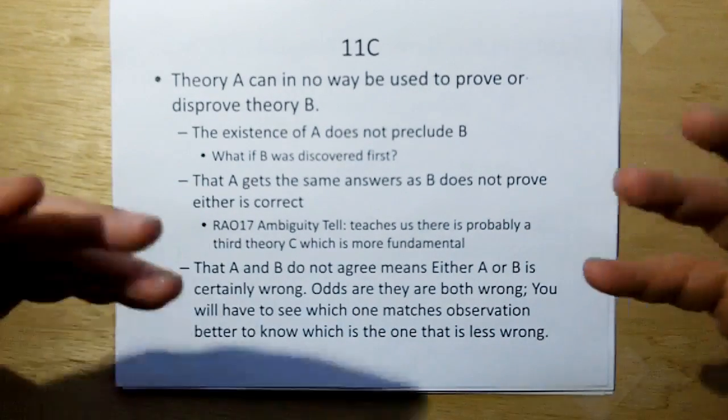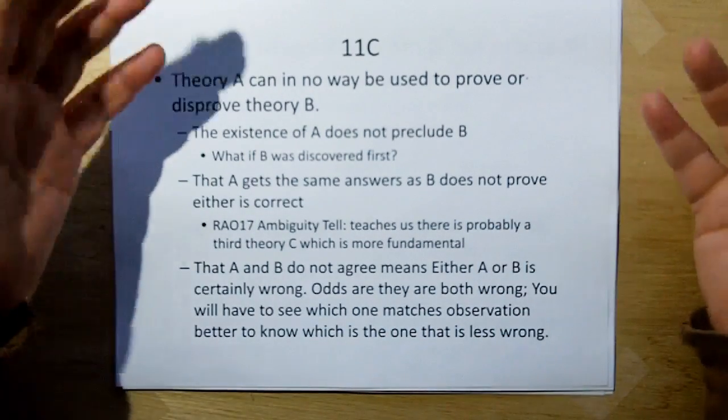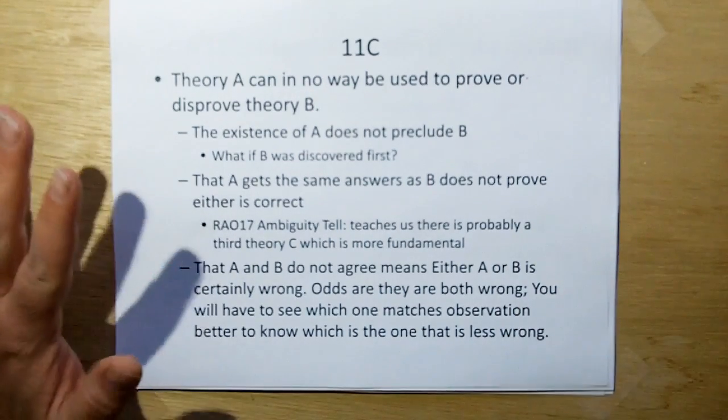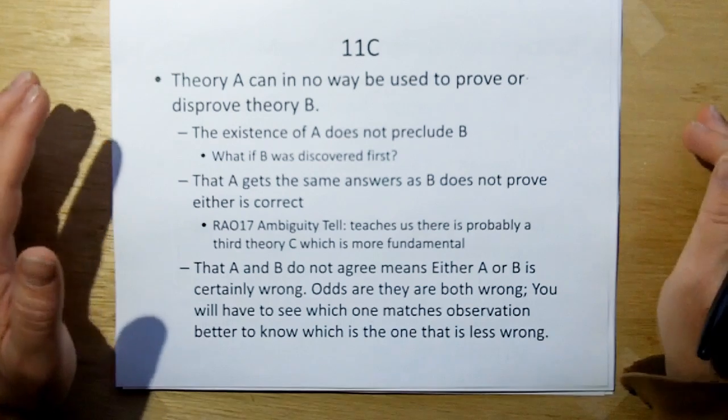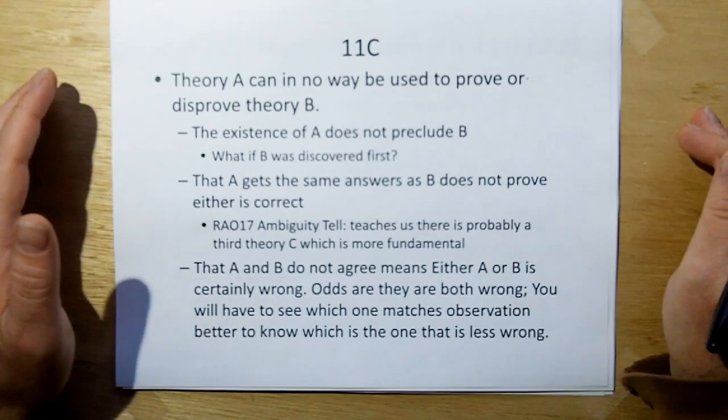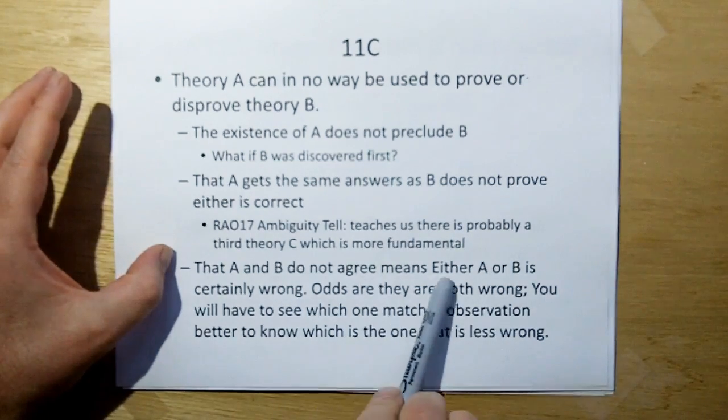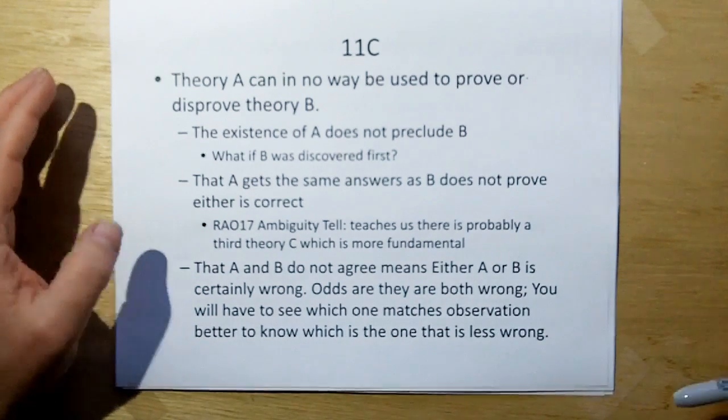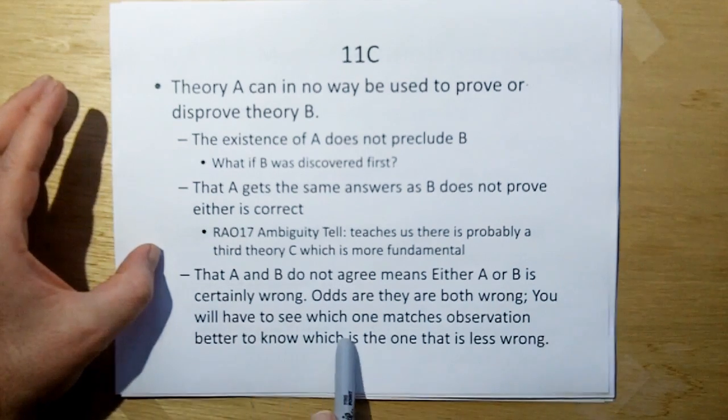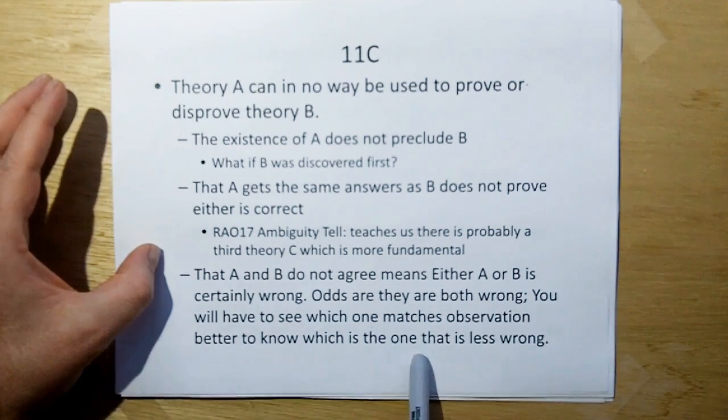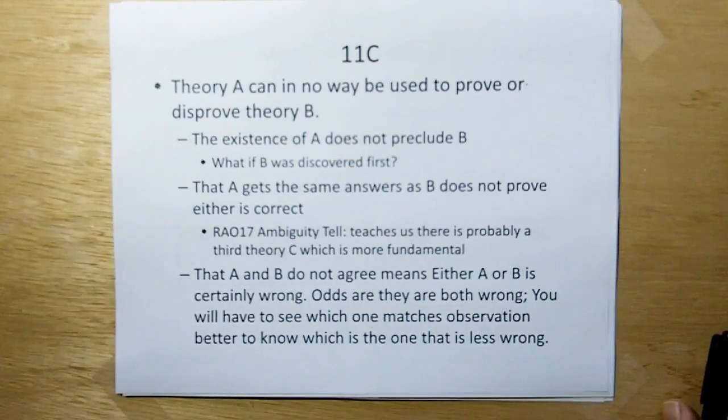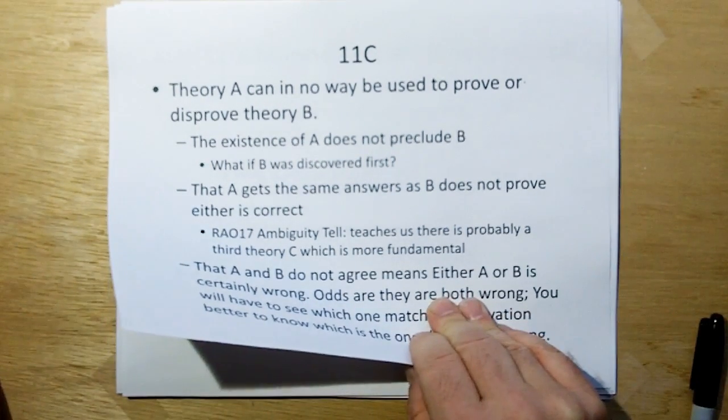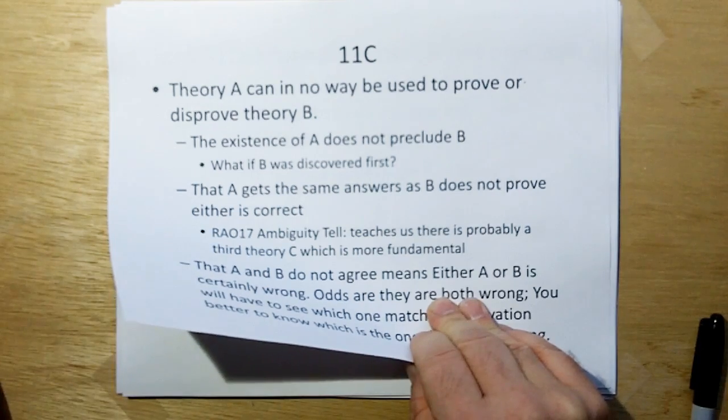And that A gets the same answers as B does not prove either is correct because rule of acquisition one is that you can never prove anything correct unless you have infinite observations. And rule of acquisition teaches there's probably a third theory C which is more fundamental. In other words, if A and B get the same answer then that's kind of an ambiguity and we should start looking to say maybe there's something more fundamental than these two. That's what we're doing with the foundation series dipole experiment. And that A and B do not agree means either A or B is certainly wrong but odds are they're both wrong. You'll have to see which one matches observation better to know which one is less wrong.